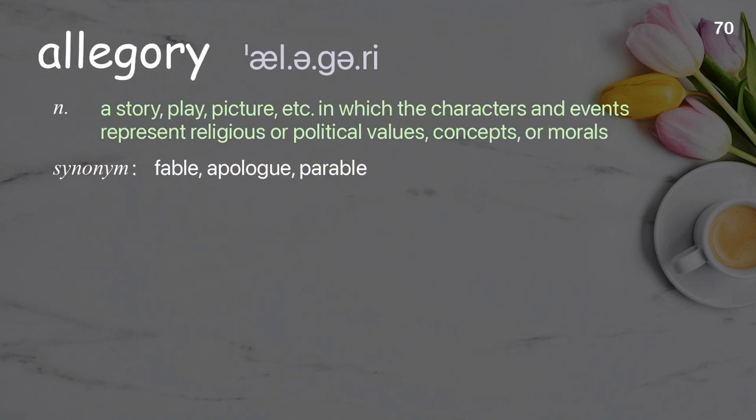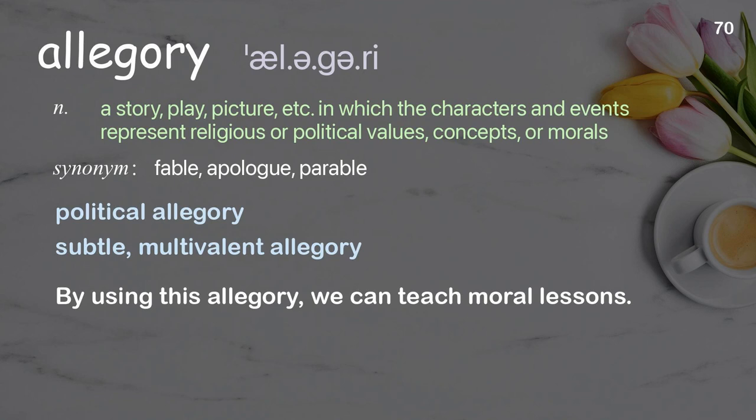Allegory: A story, play, picture, etc., in which the characters and events represent religious or political values, concepts, or morals. Examples: Political allegory. Subtle, multivalent allegory. By using this allegory, we can teach moral lessons.